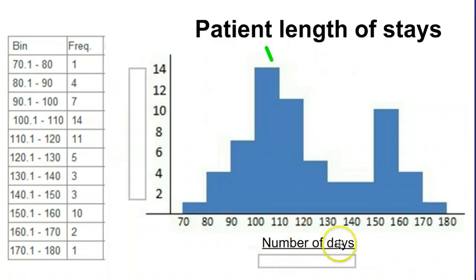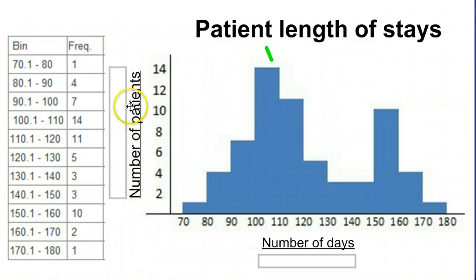And in this case, we keep our labels down here, number of days. Over here, our frequency, how many patients, how many numbers in our distribution, which corresponded to different patients, are there in each of these ranges. So there's a lot of patients in this 100 to 110 day stay. But there's also an interesting thing going on over here. Between 150 to 160, we get another spike.